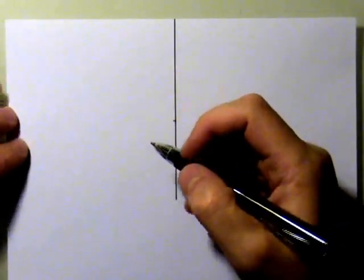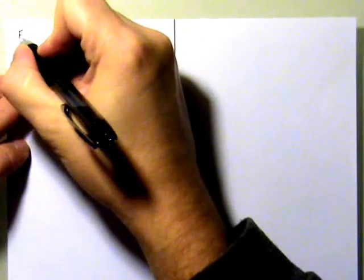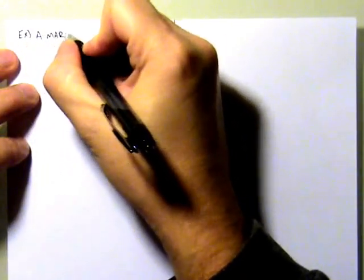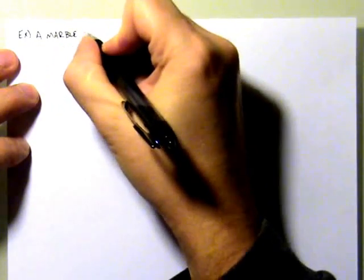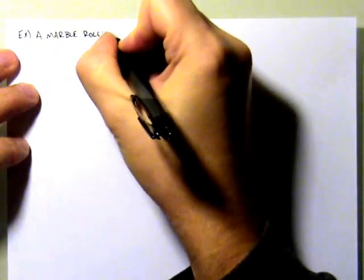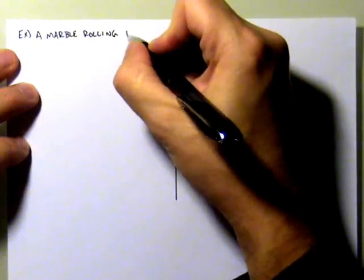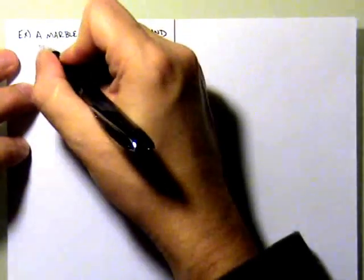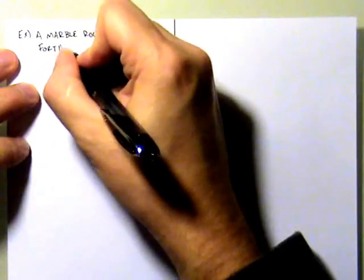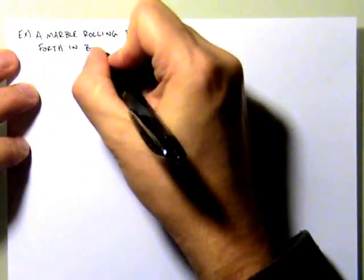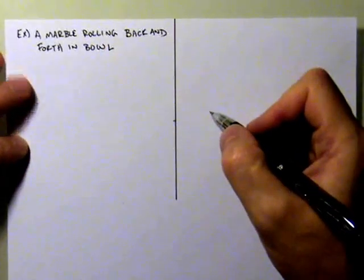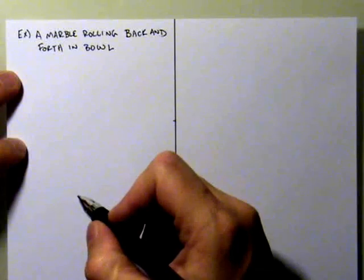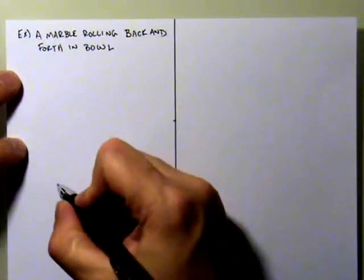Let's look at our last example. The last example will be a marble rolling back and forth in a bowl. Let me just give you a sense of how the situation would actually look.